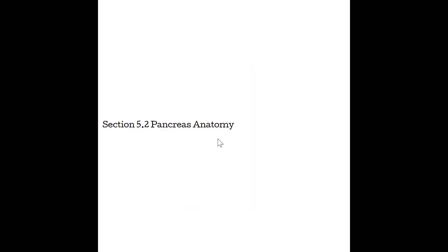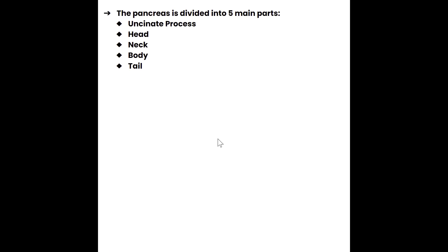Section 5.2, Pancreas Anatomy. The pancreas is divided into five main parts: the uncinate process, the head, neck, body, and tail.